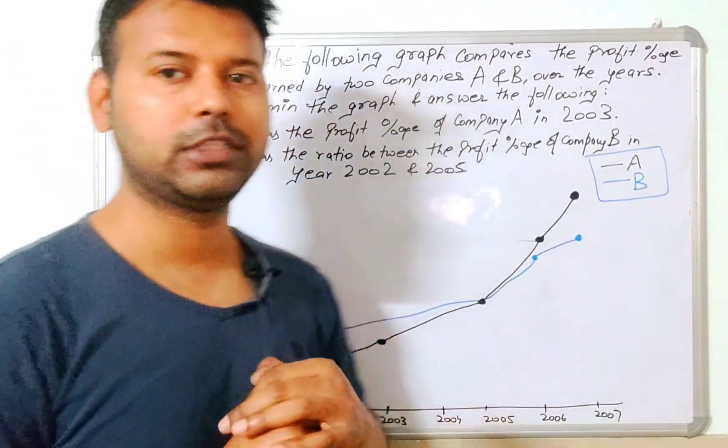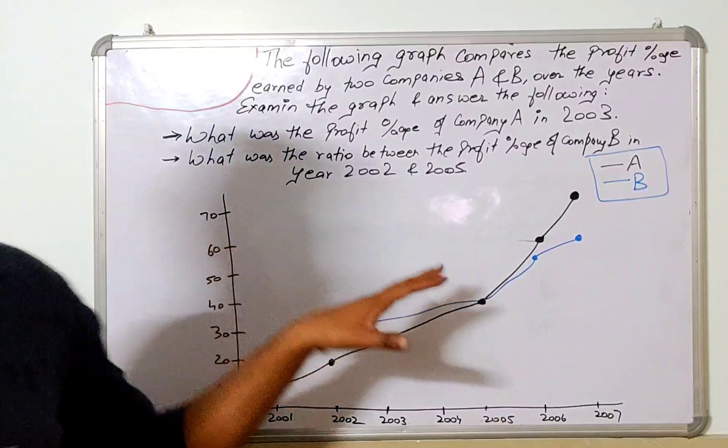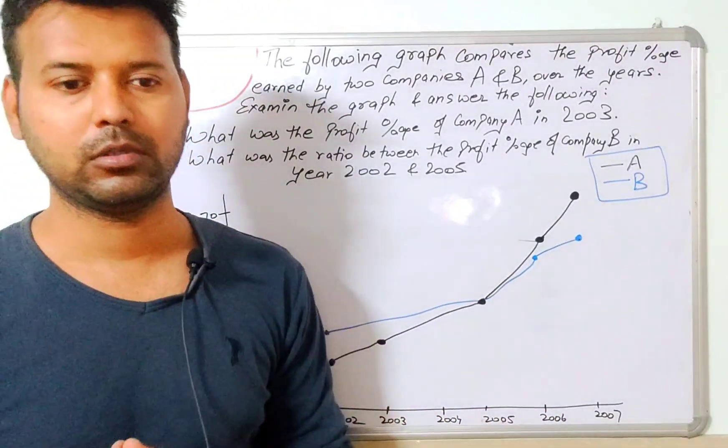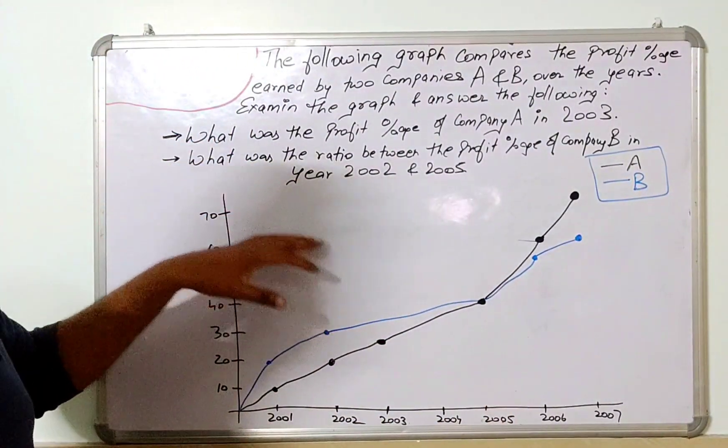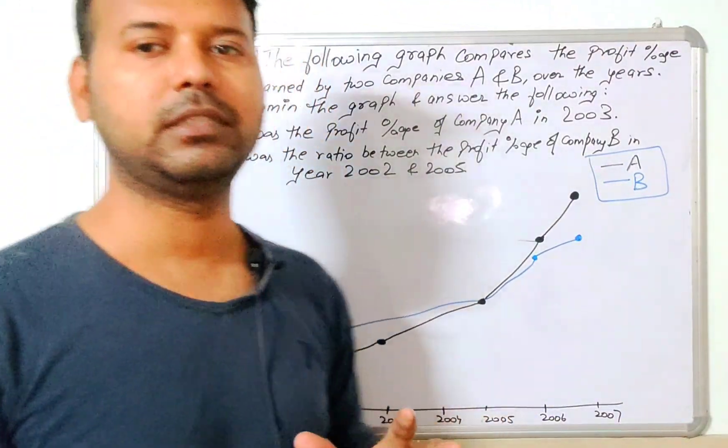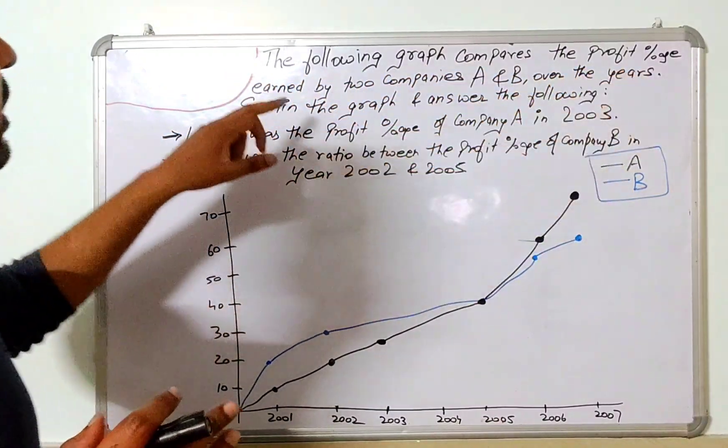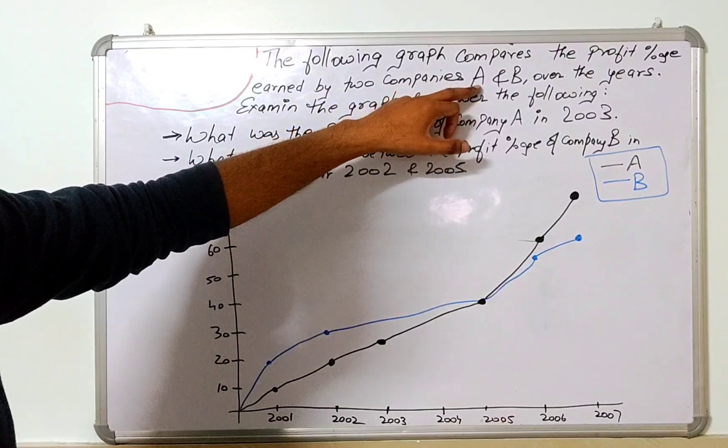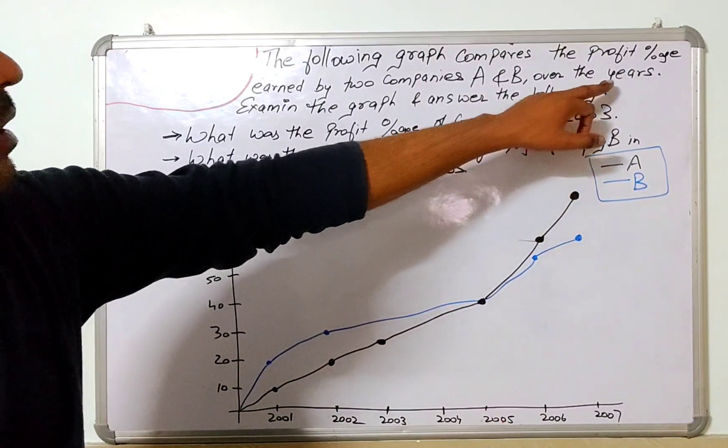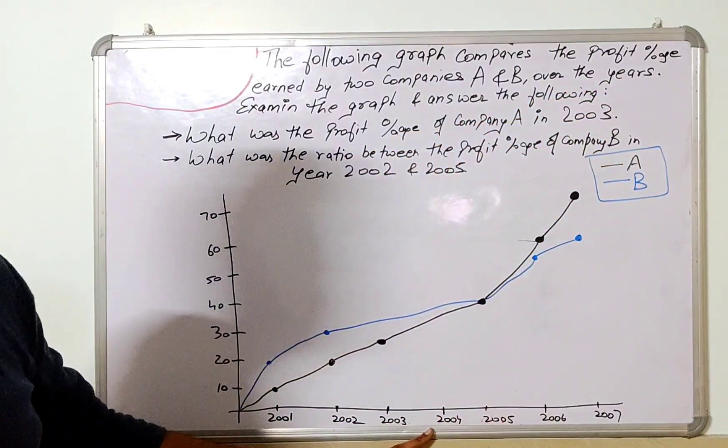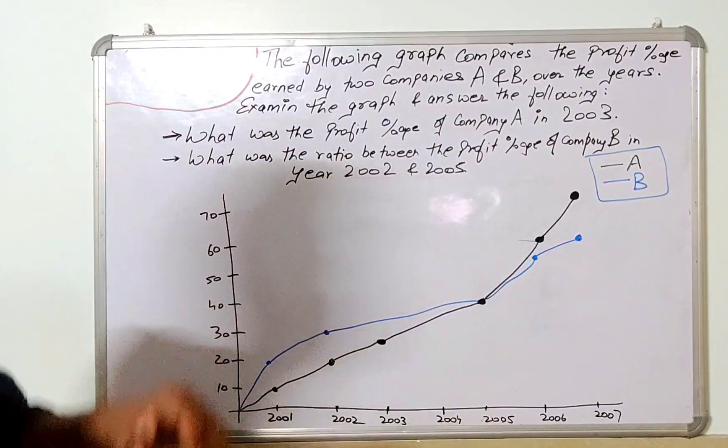So now again the next question is about this type of graph, linear graph in which the question is - now this same question came twice. On the day which I gave, this question came, and after a few days again the same graph came with another question. So the question is being repeated. So what was the question? Let us see. The following graph compares the profit percentage earned by two companies A and B. Now over here the profit percentage of two companies are given, A and B. A one is with black and B one is with blue. Over the years, over here years are written. Examine the graph and answer the following.